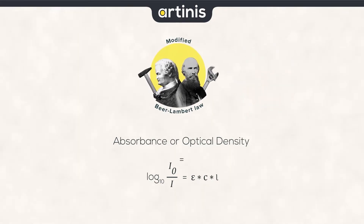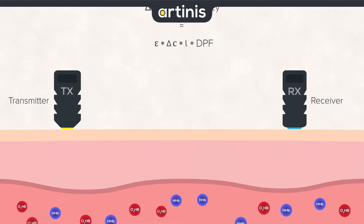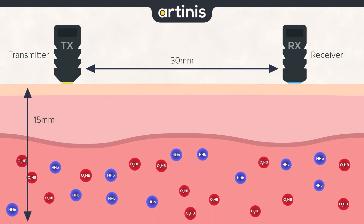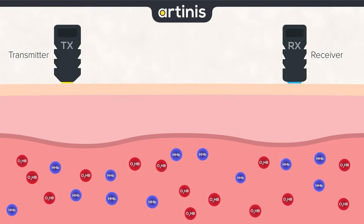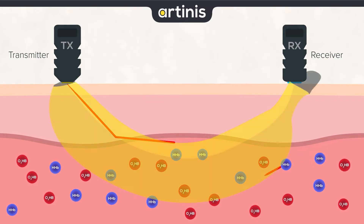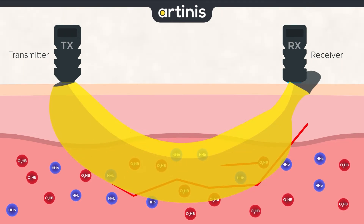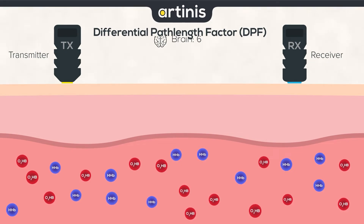How is it modified? We include a delta, so we measure a change, and we include a differential path length factor, or DPF. In this picture, we can see that a transmitter and a receiver are placed on the skin. In theory, a thin line of light goes from one to the other, but in reality this ray of light is more broad, or banana-shaped, with scattering happening in many places along the ray. To correct for these light losses, we include the DPF, which is a constant factor. For the brain, this is around 6, while for muscle research it is generally around 4.